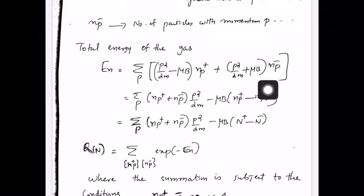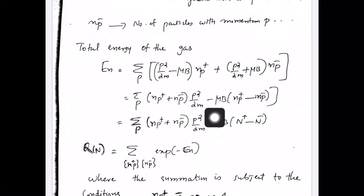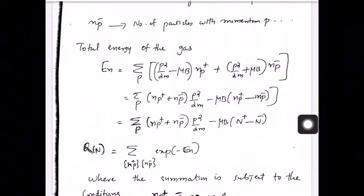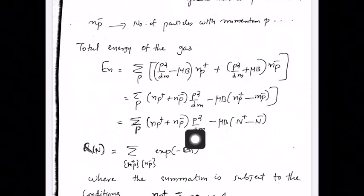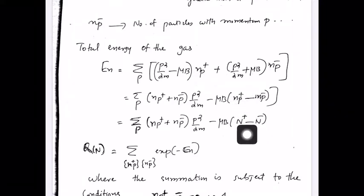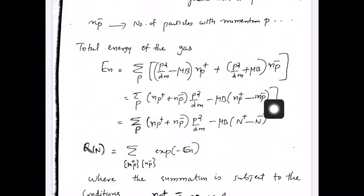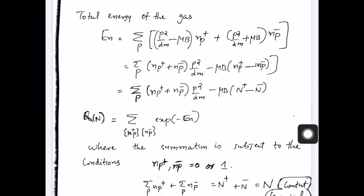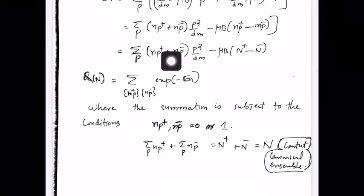So you get the total energy of the system by summing over all possible momentum states. After certain rearrangements, this becomes: (n_p+ + n_p-)(p²/2m) minus μB(n_p+ − n_p−). Applying the summation to n_p+, we get the total number of particles with moment parallel to the field: sigma_p n_p+ = N+, and sigma_p n_p- = N−, the total number of particles with magnetic moment anti-parallel to the field.